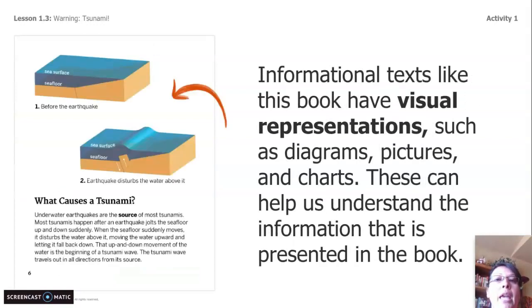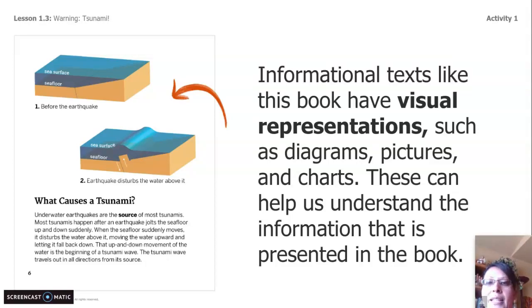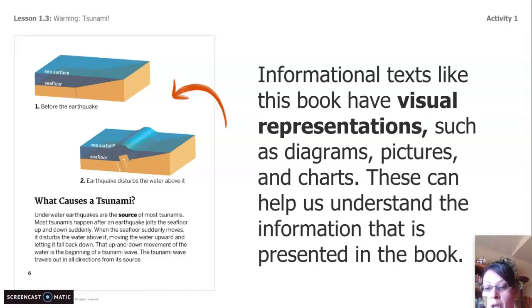One more thing — informational text, like the one we're about to read, always has a visual representation, usually a diagram or a picture or a chart, and these can help us understand the information coming from the book.